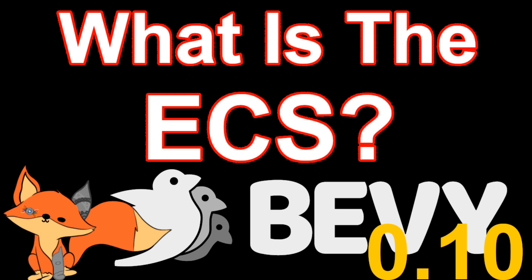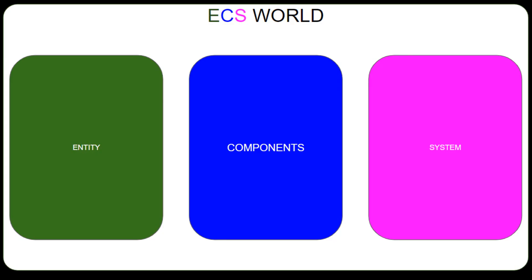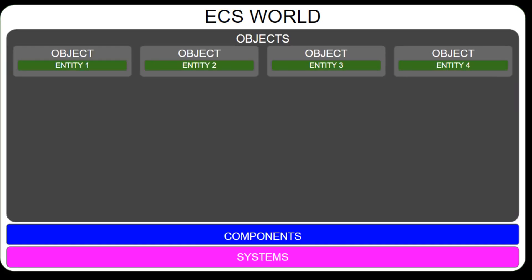Before we dive into details about how an ECS works, let's start by breaking it down into the three main components: Entities, Components, and Systems. Boy, is that going to get confusing.